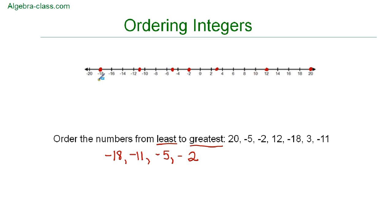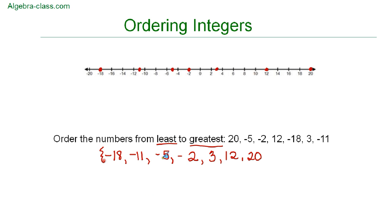So after we've ordered our negative numbers, we can order our positive numbers, which you're probably used to doing. So we have 3, 12, and then 20. So this set of numbers, in order from least to greatest, is negative 18, negative 11, negative 5, negative 2, 3, 12, and 20.